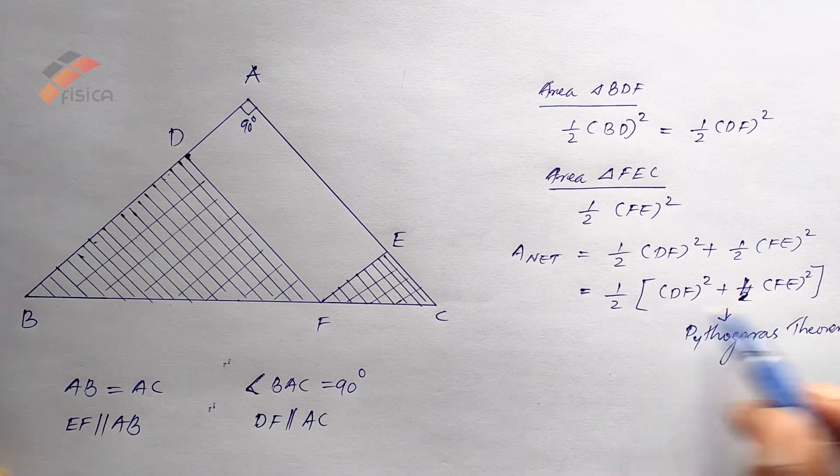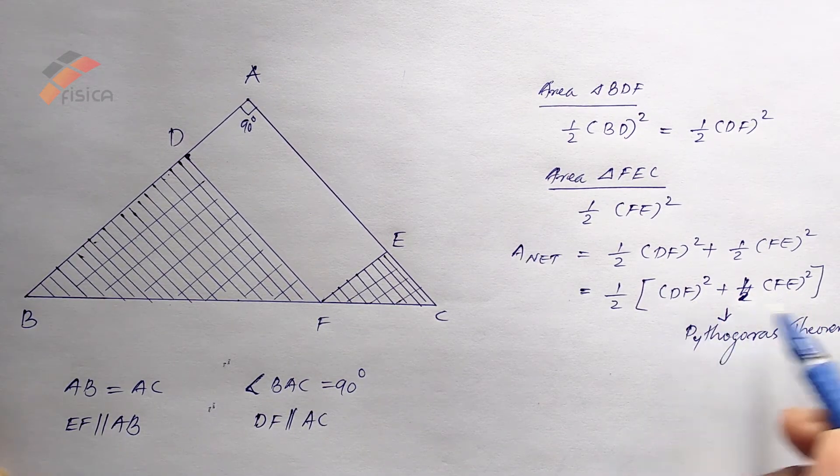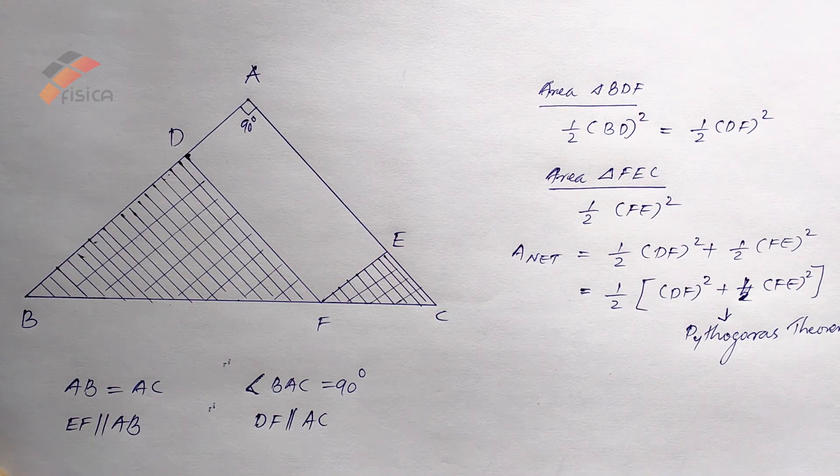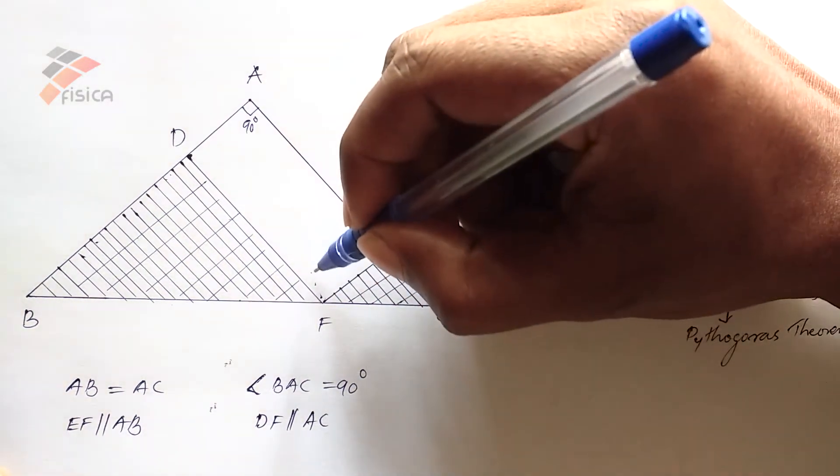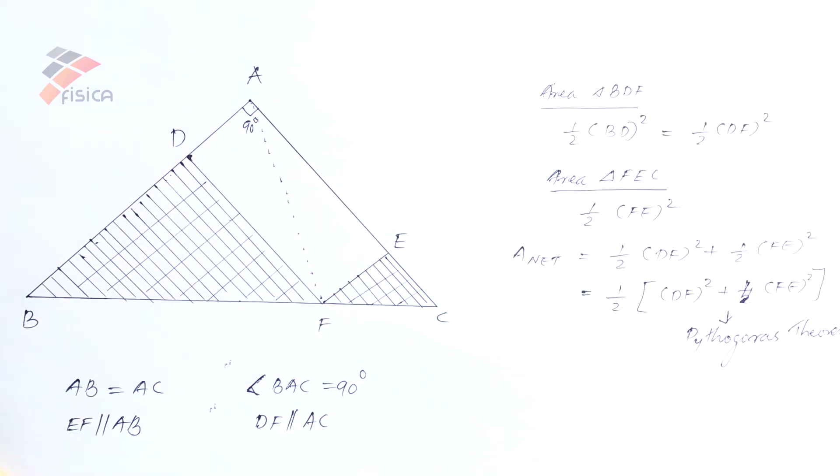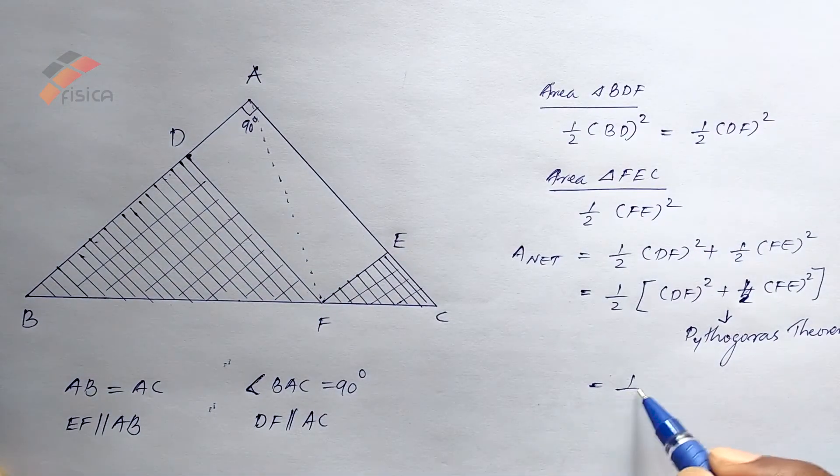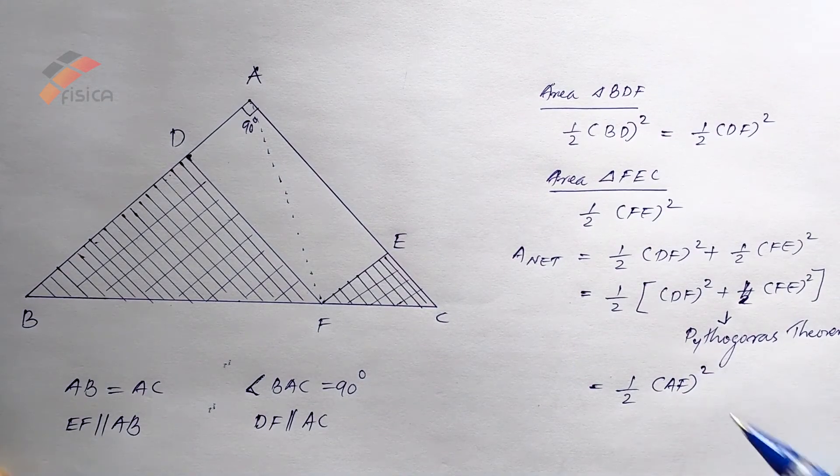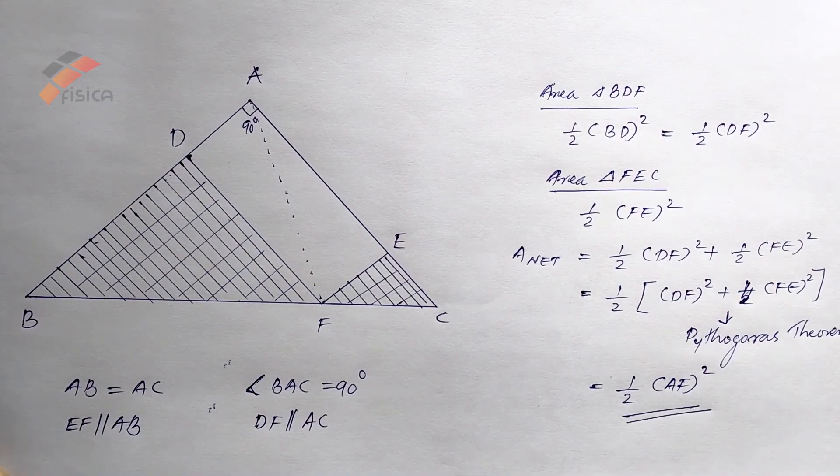We can rewrite it like this, half into AF squared. So this is the answer.